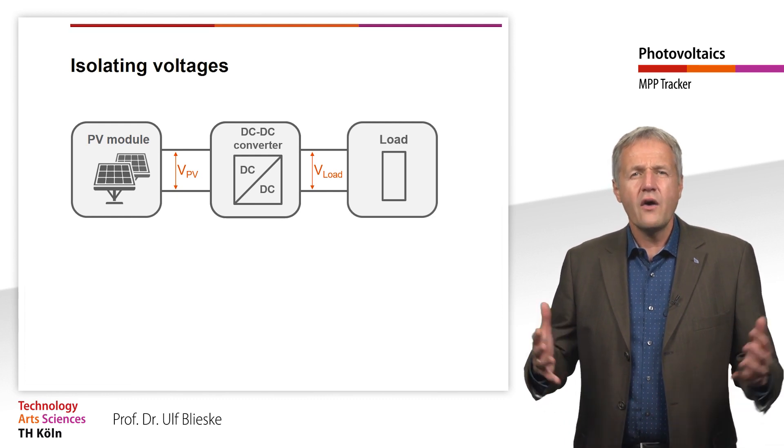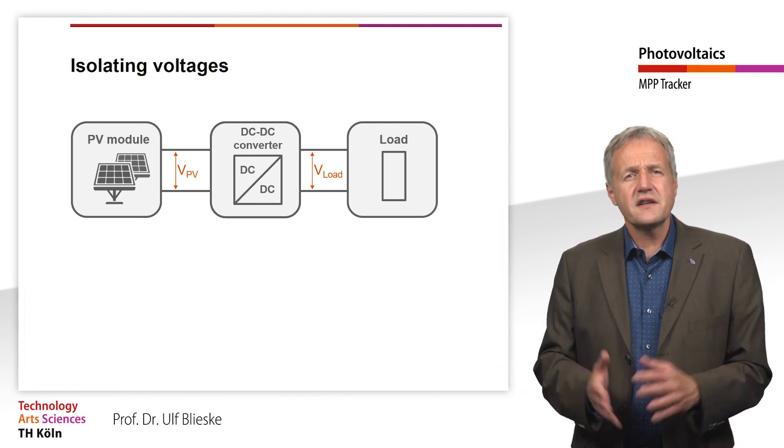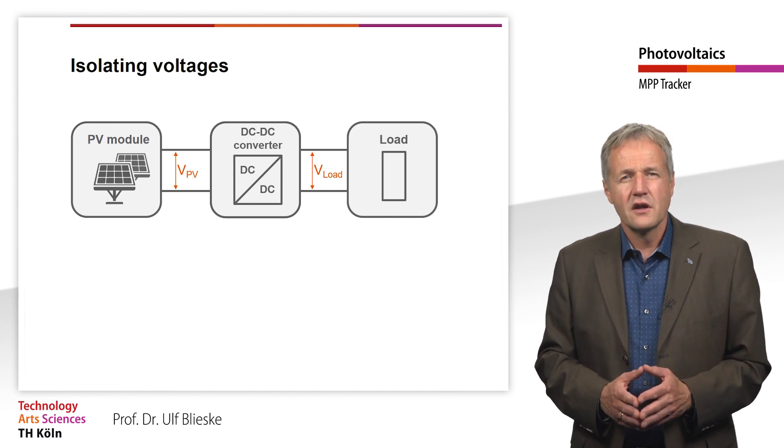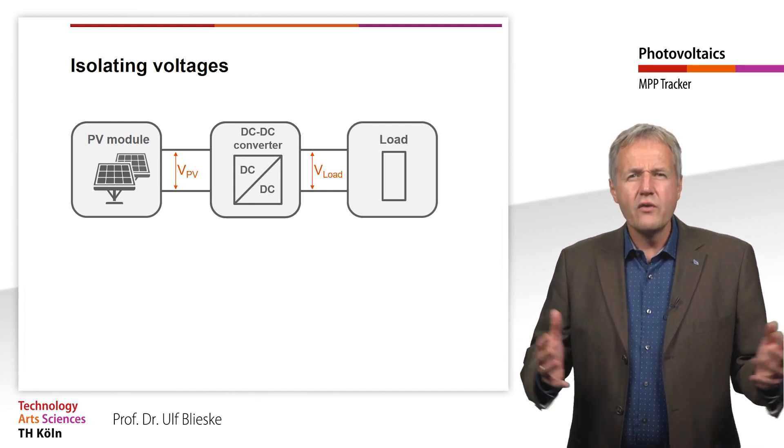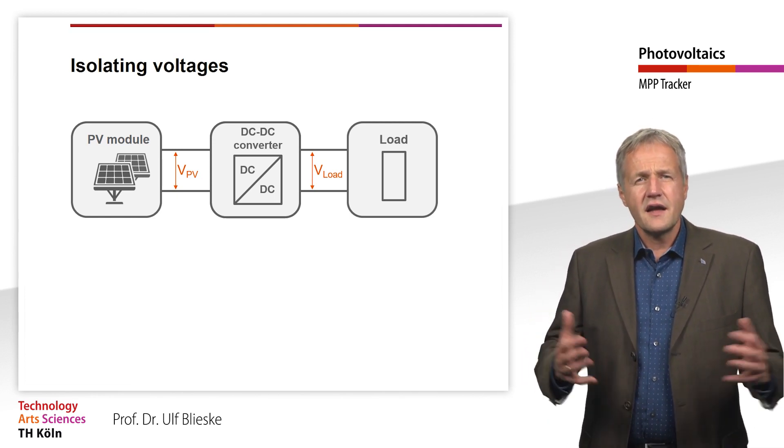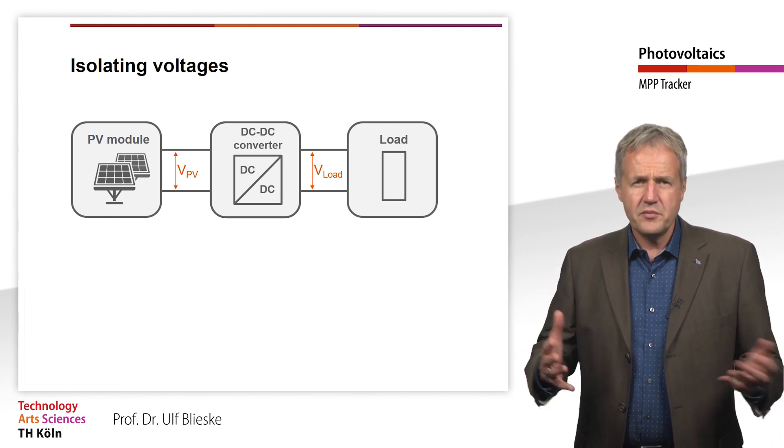So, we now have the option of setting the voltage on the module independently of the load. Now we only have to find out the MPP voltage of the module and can then operate the module in the MPP.